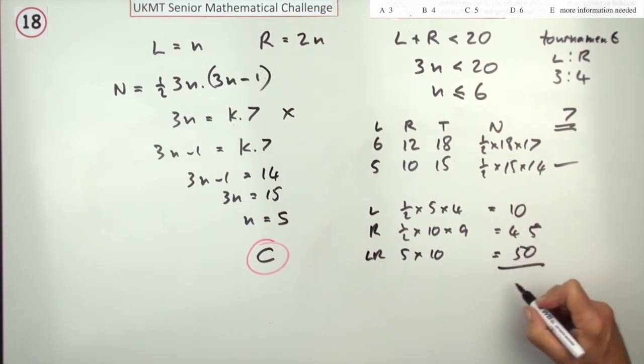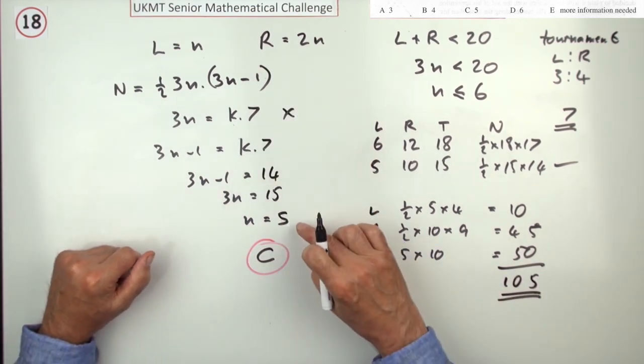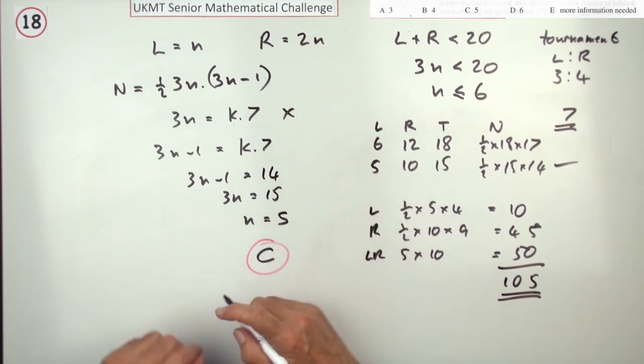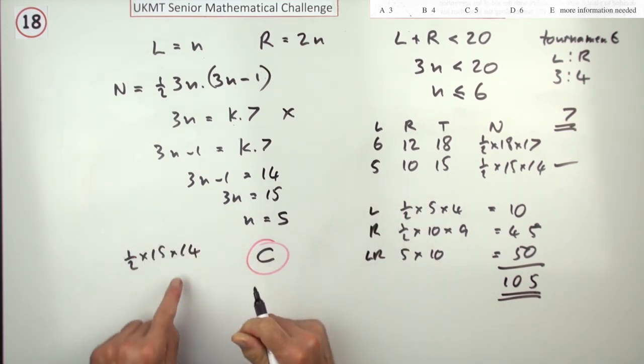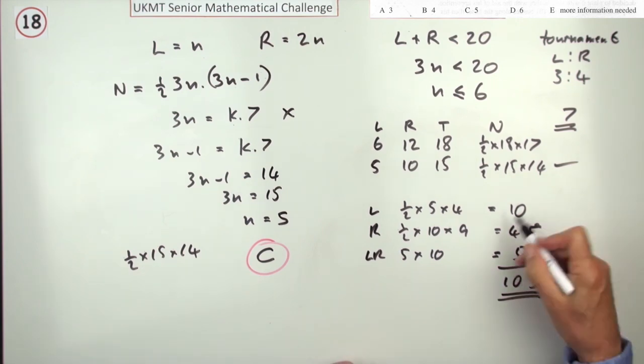That makes 105 matches altogether, which you knew anyway, because if there were 5 plus 10 is 15, if you just work out a half of 15 times 14, 7 times 15s, that's 105, but this is the breakdown.